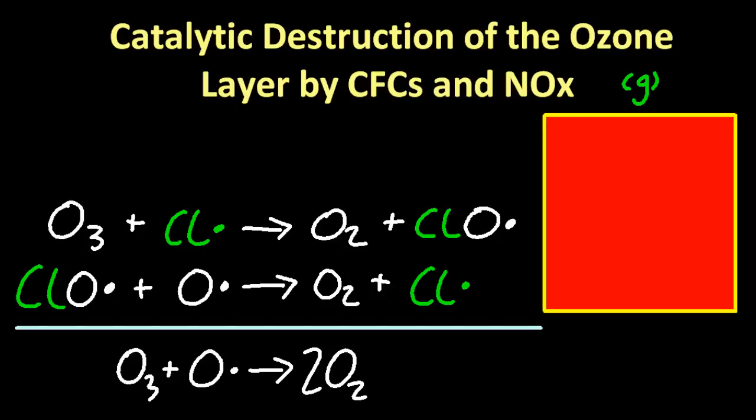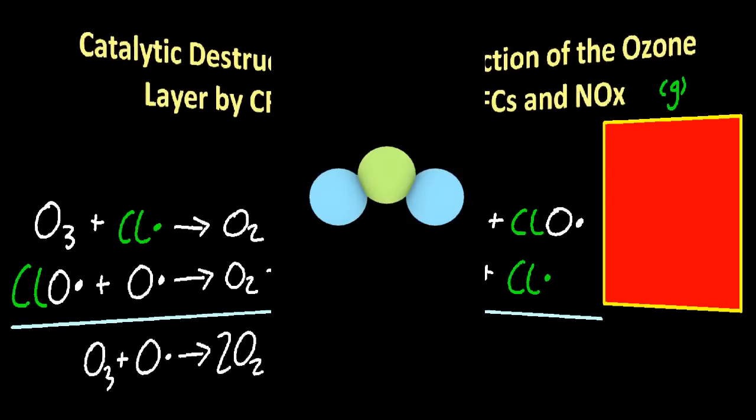That red box contains a hundred thousand red pixels, each one represents the damage that a chlorine radical can do—it can destroy a hundred thousand ozone molecules. So you see how even a little squirt of CFCs overall was really bad for the environment.